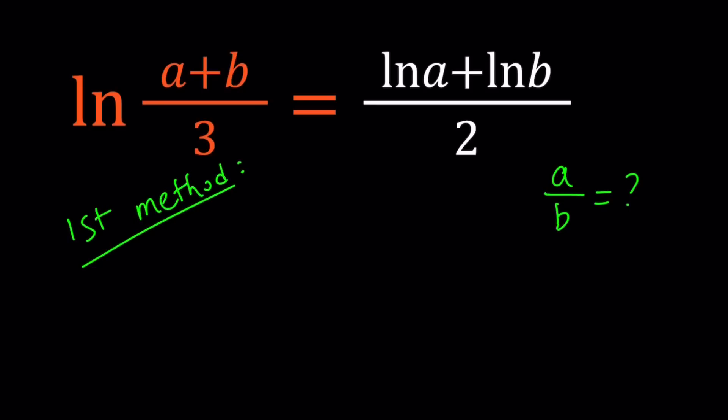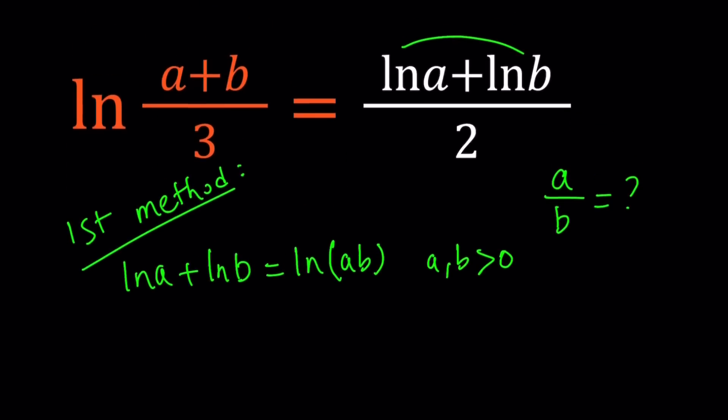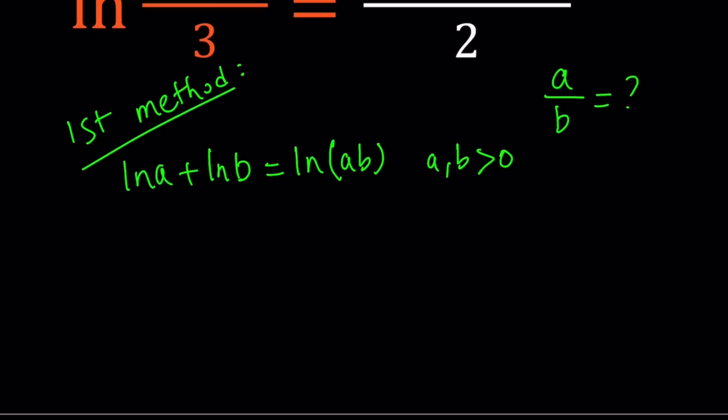For my first method, I'm going to use a property of logs, which is very helpful. If you have the sum of two logs, that can be written as the log of a product. So ln a + ln b can be written as ln(ab), and vice versa. Of course, in this case, we have to have a and b be positive, because a log function is only defined if the arguments are positive.